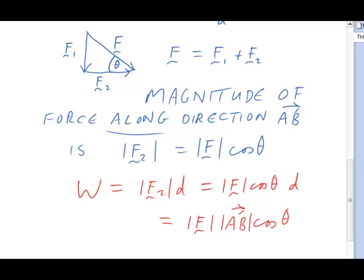Because it's a scalar, it is called the scalar product. Of course, we also need some notation to indicate this product, and people use the dot. So we now write F dot AB is equal to this quantity.